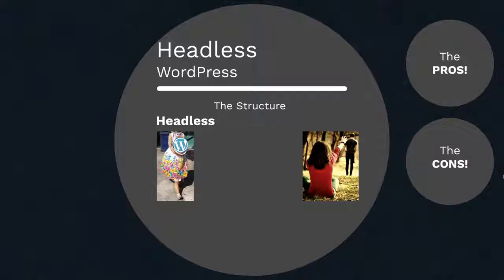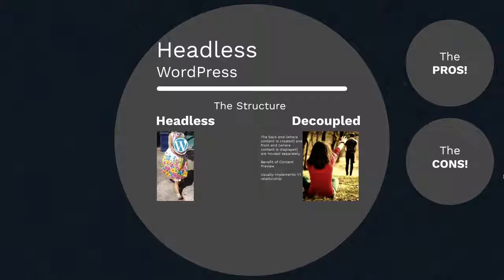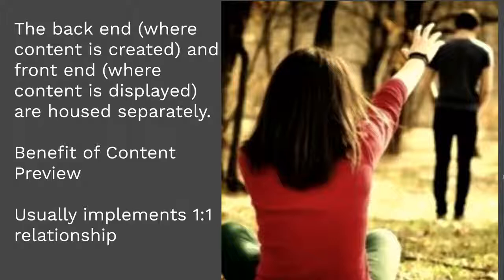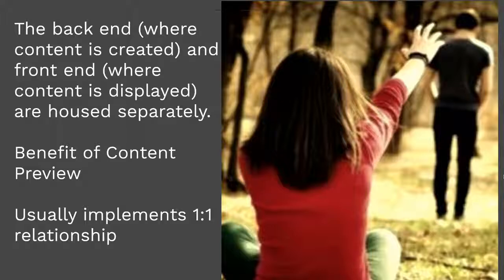How about the next structure? The girl is saying goodbye to the boy — they've broken up. That's why it's called the decoupled approach. Before, the front end and back end were coupled in the WordPress installation, but since we're separating them, the term used is 'decoupled.' For the decoupled structure, the back end where content is created and the front end where content is deployed are housed separately — so technically you have two applications. The first is WordPress as your back end, and the front end can be any framework you specialize in.